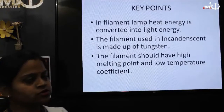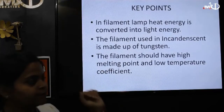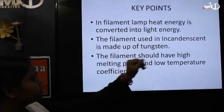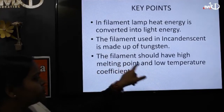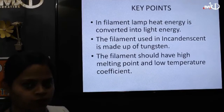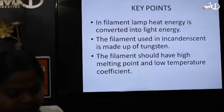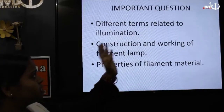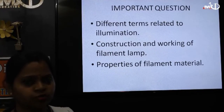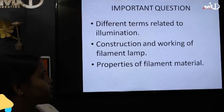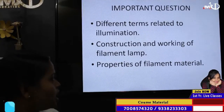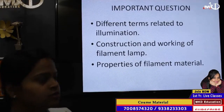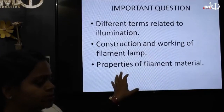From this class we conclude that in the filament lamp we are converting heat energy into light energy. The filament used is tungsten, and it must have a high melting point and low temperature coefficient. For exam purposes, the important questions are: the different terms related to illumination such as lumen and luminous flux, the construction and working of a filament or incandescent lamp, and the different properties of the filament material such as specific resistance, ductility, and so on.